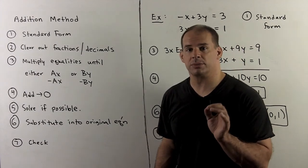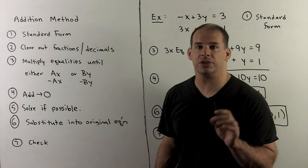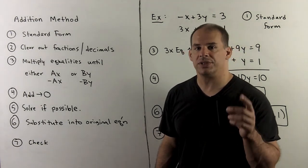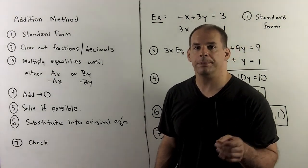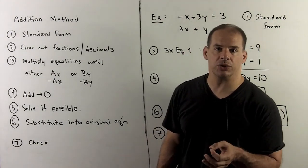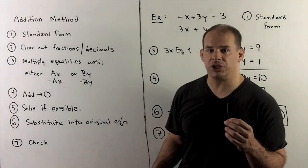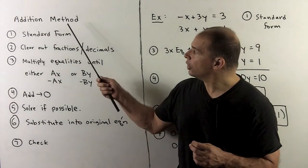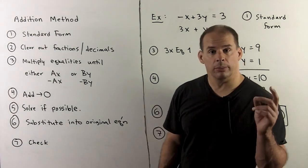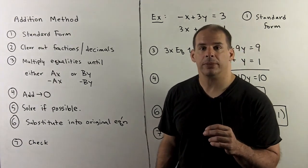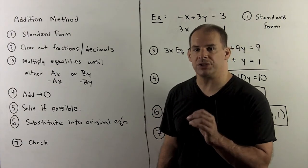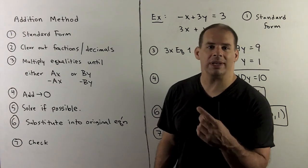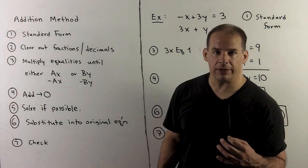We continue with solving systems of linear equations in two variables. We've seen the graphing method and the substitution method. Now we have the addition method. You may be wondering: the substitution method always gets us to an exact answer — why do we need yet another method?